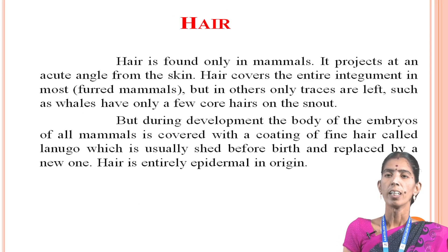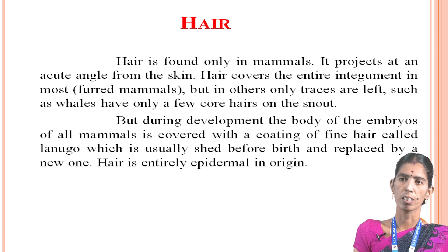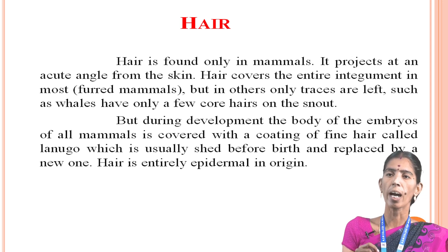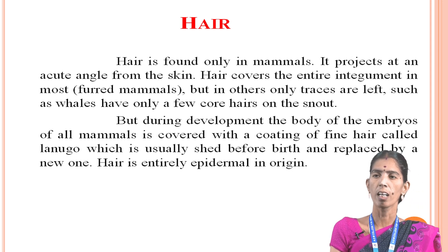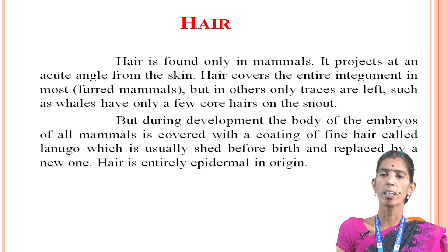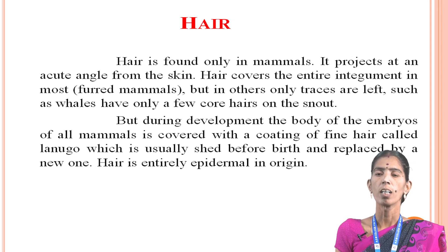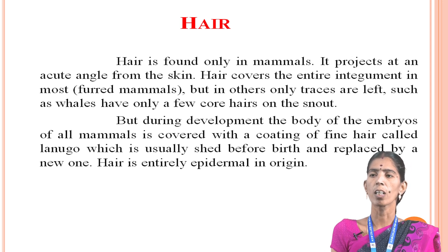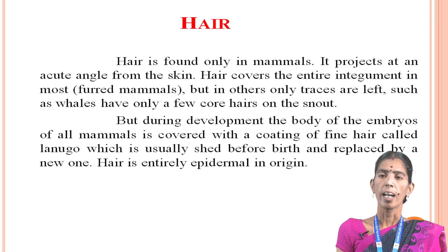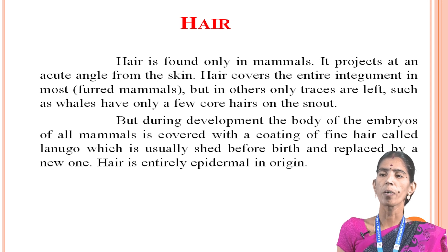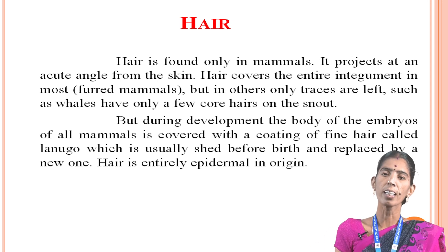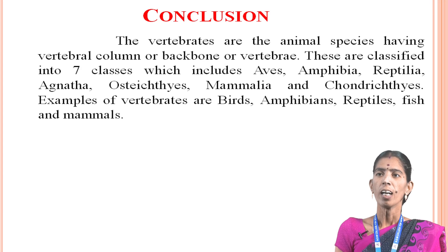Melanins are soluble only in acids. Eumelanin granules vary from black to dark brown, and phaeomelanin granules may be almost colorless to reddish brown. Then hair. Hair is found only in mammals. It projects at an acute angle from the skin and covers the entire integument in most mammals. In others, only traces are left — such as whales, which have only a few sparse hairs on the snout. During development, the body of embryos of all mammals is covered with a coating of hair called lanugo, which is usually shed before birth and replaced by a new coat. Hair is entirely epidermal in origin.